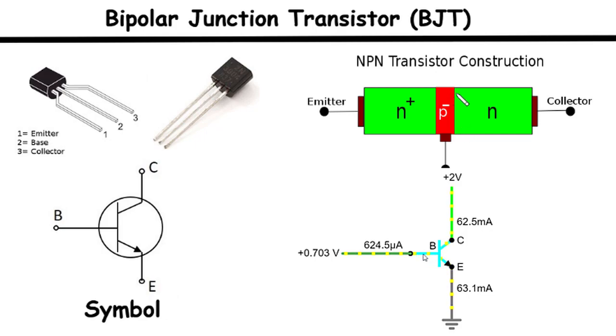Transistor action. The fascinating behavior of an NPN transistor arises from the interaction of both the base emitter and base collector junctions. When a small current flows through the base emitter junction, it causes a much larger current, known as the collector current, to flow through the base collector junction. This phenomenon is often referred to as current amplification or current gain, a fundamental characteristic of transistors.